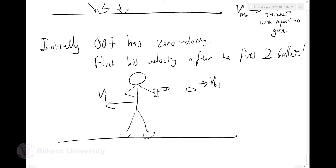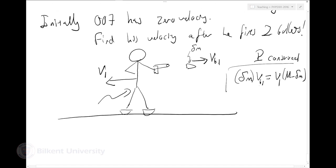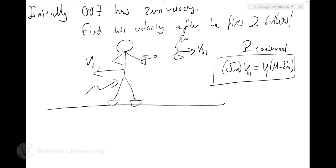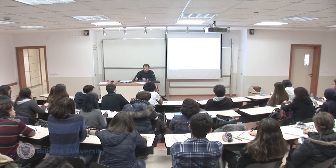Let V1 be James Bond's velocity after the first shot. I know total momentum is conserved. So delta M times Vb1 must equal V1 times (M minus delta M). That's my first equation. I have two unknowns: Vb1 and V1.